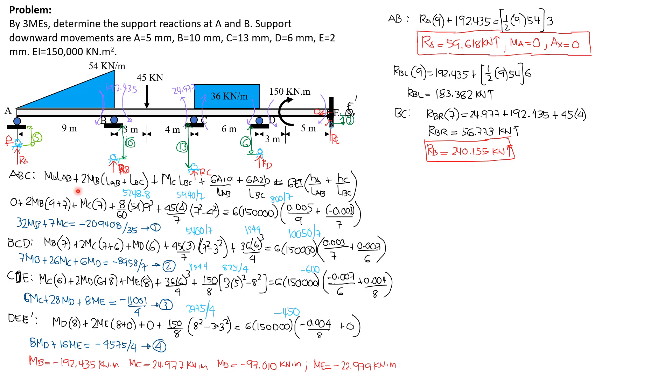This is the guide, moment at A times length of AB, plus twice the moment at the interior point or support times quantity length of AB plus length of BC. By the way, the moment of inertia is constant. That's why these lengths are free of denominator. If the moment of inertia is not constant, this length should be divided by the moment of inertia supposedly. In this case, we just consider EI equals 1 or I equals 1.